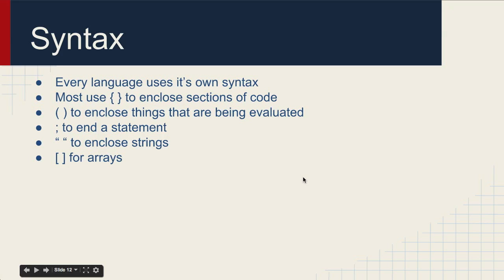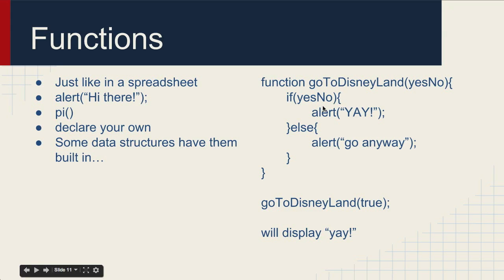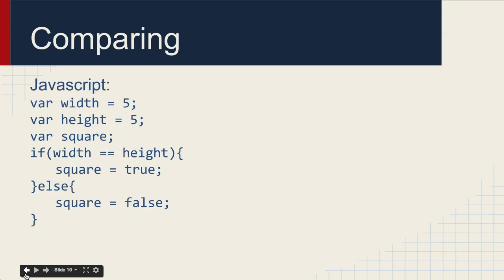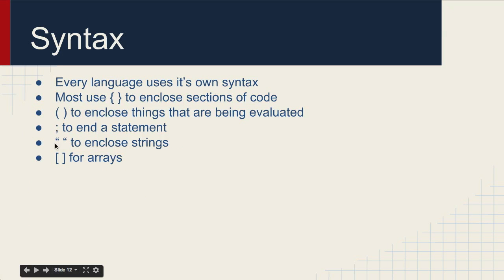Most languages use curly braces or curly brackets to enclose sections of code, so like a function or a class. Usually parentheses are used to enclose things that are being evaluated. The semicolon is used to end a statement most of the time. Not all languages use that, but JavaScript, Java, C, C++, a bunch of them do. You can basically think of this as like a period on a sentence. When we declare a variable, we end it with a semicolon. When we have some kind of function, we end that with a semicolon. Usually we use double quotes to enclose a string and we use an angle bracket for arrays.